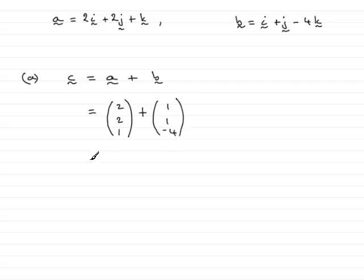And then if we add these two vectors together, we have 2 and 1 is 3, 2 and 1 is another 3, and 1 and minus 4 is minus 3. So we have the vector c then either as a column vector or if you like you could write it just back as 3i plus 3j minus 3k.